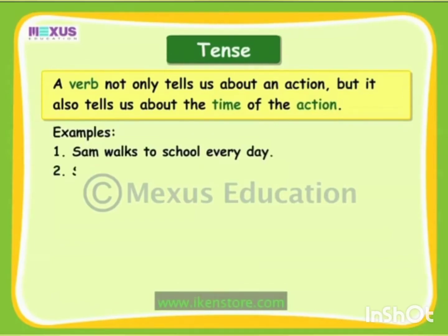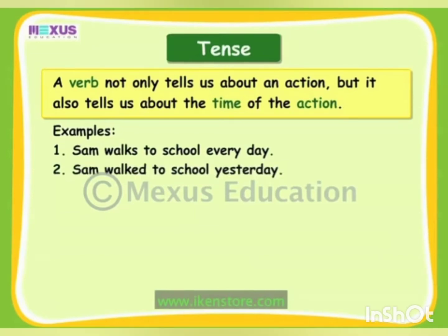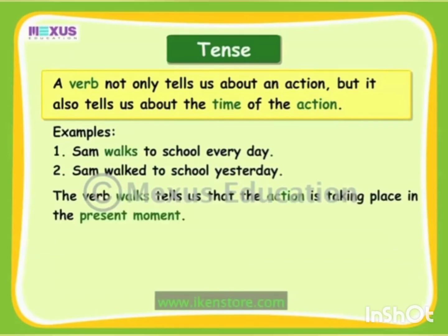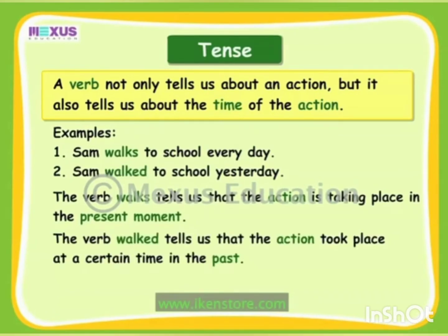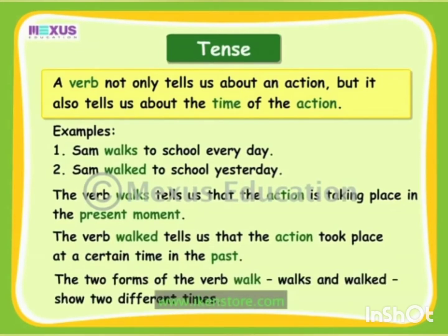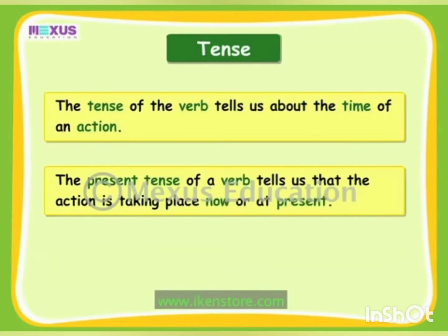A verb not only tells us about an action, but it also tells us about the time of the action. For example, 'Sam walks to school every day' and 'Sam walked to school yesterday.' In the first example, 'walks' is a verb which tells about the present time, whereas in the second example, 'walked' is in its past form. It tells us that the action took place at a certain time in the past. The two forms of the verb walk — walks and walked — show two different times. This is called tense.